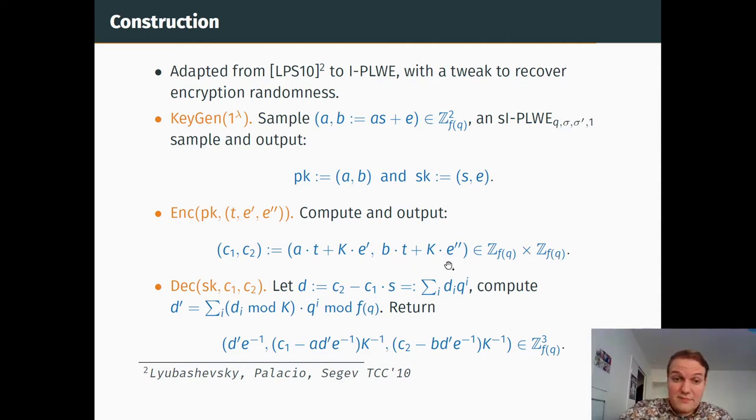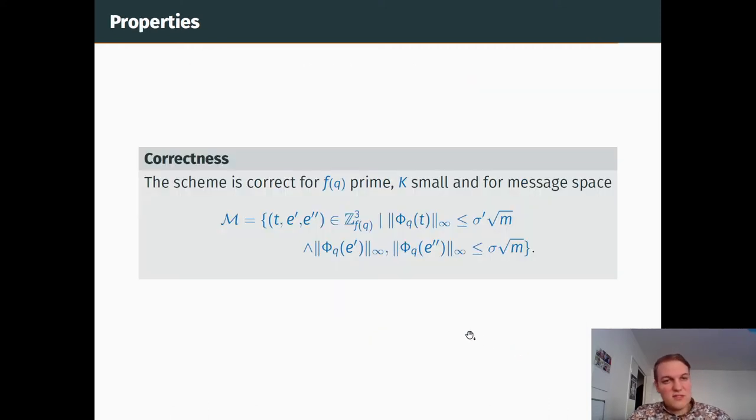The decryption algorithm focuses mainly on recovering t. To do so, we compute c_2 minus c_1 times s, and we can see that it is e times t plus k times some stuff. What we do is we compute each coefficient of the decomposition of d mod k, and if k times stuff is small enough, smaller than q for instance, then it will be erased by this operation, and then d prime will only be equal to e times t. Hence, to recover t, we compute d prime times e to the minus one. Then it's easy to recover e prime and e second. The scheme is correct for f(q) prime, k small, and for the following message space, where t, e prime, and e second are small too.